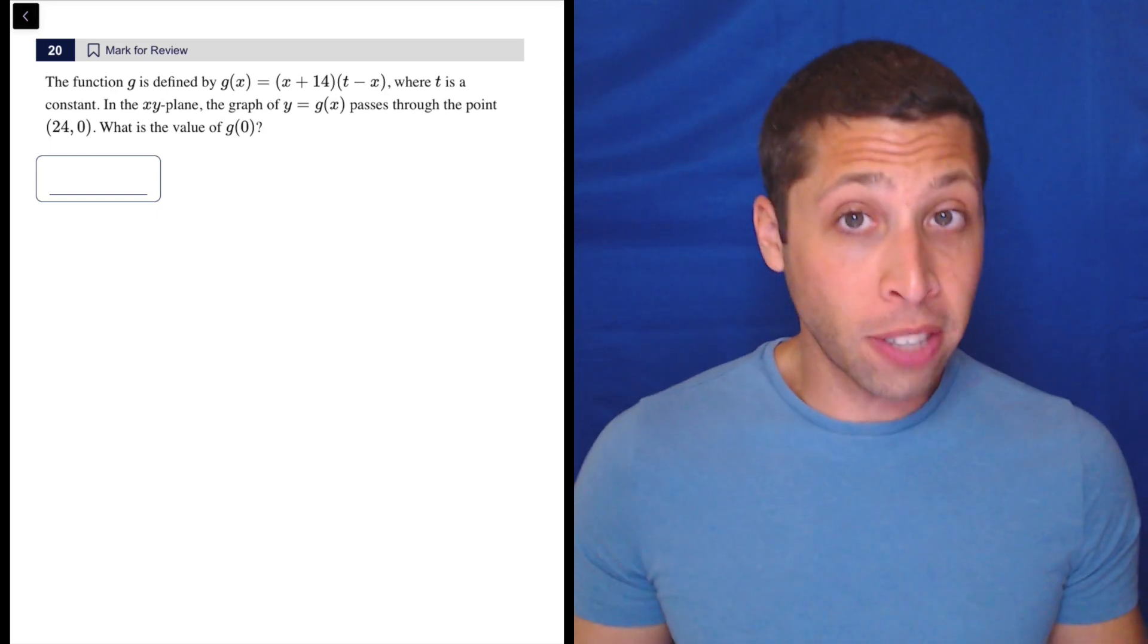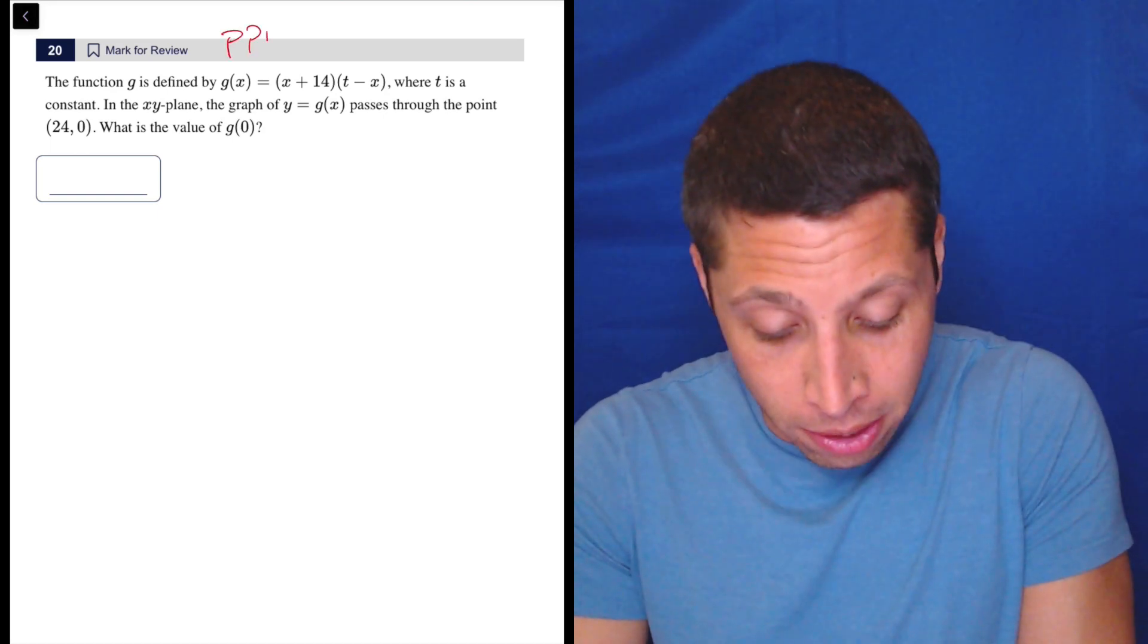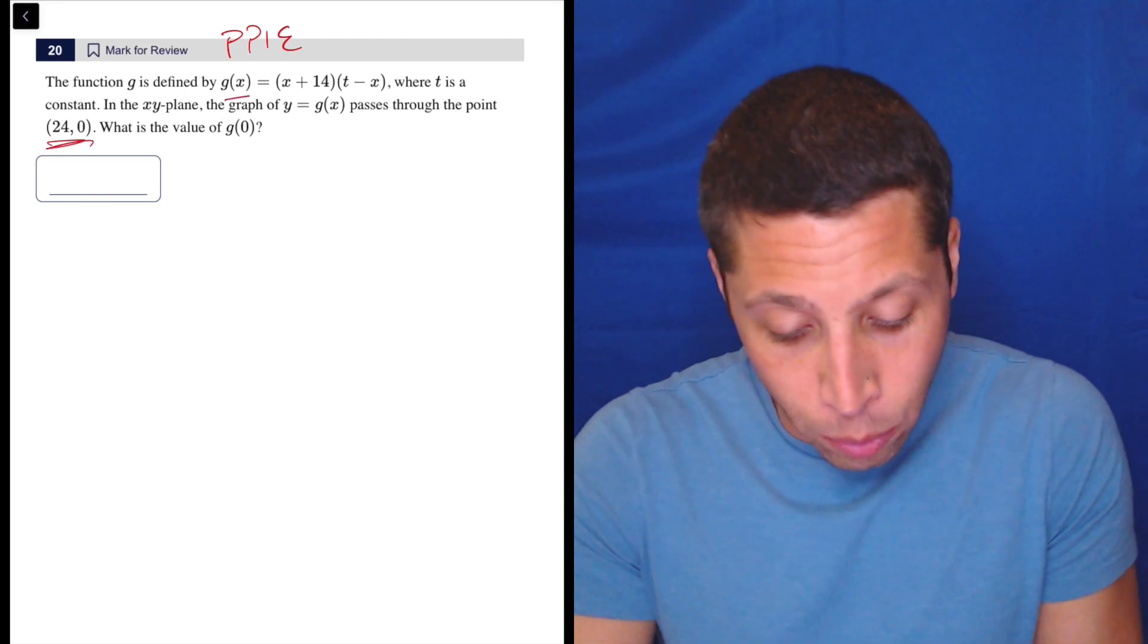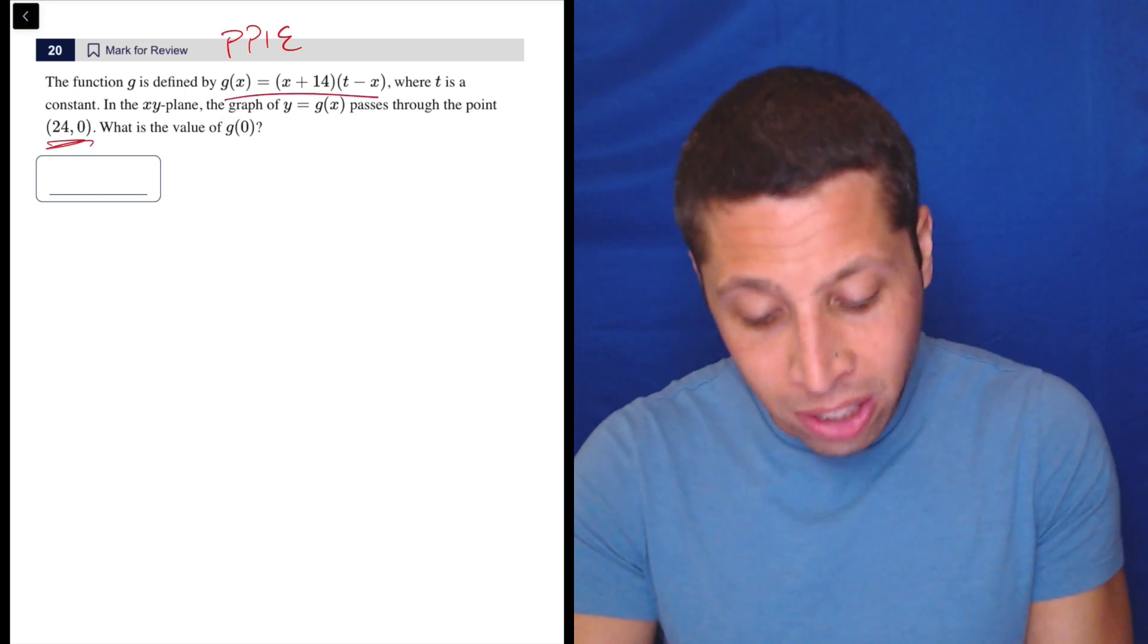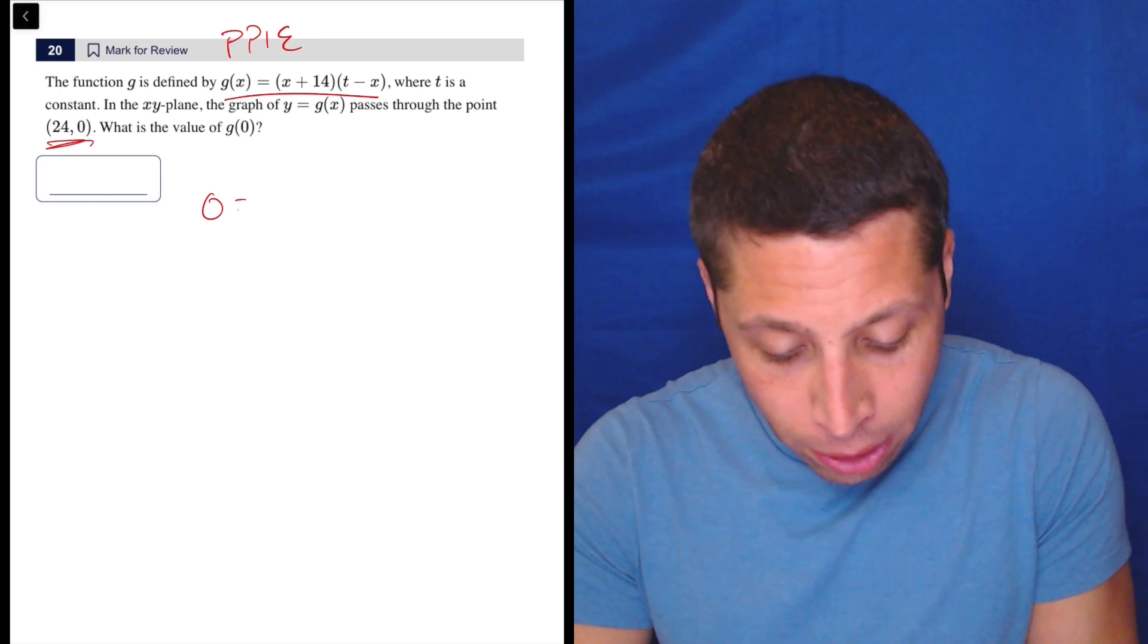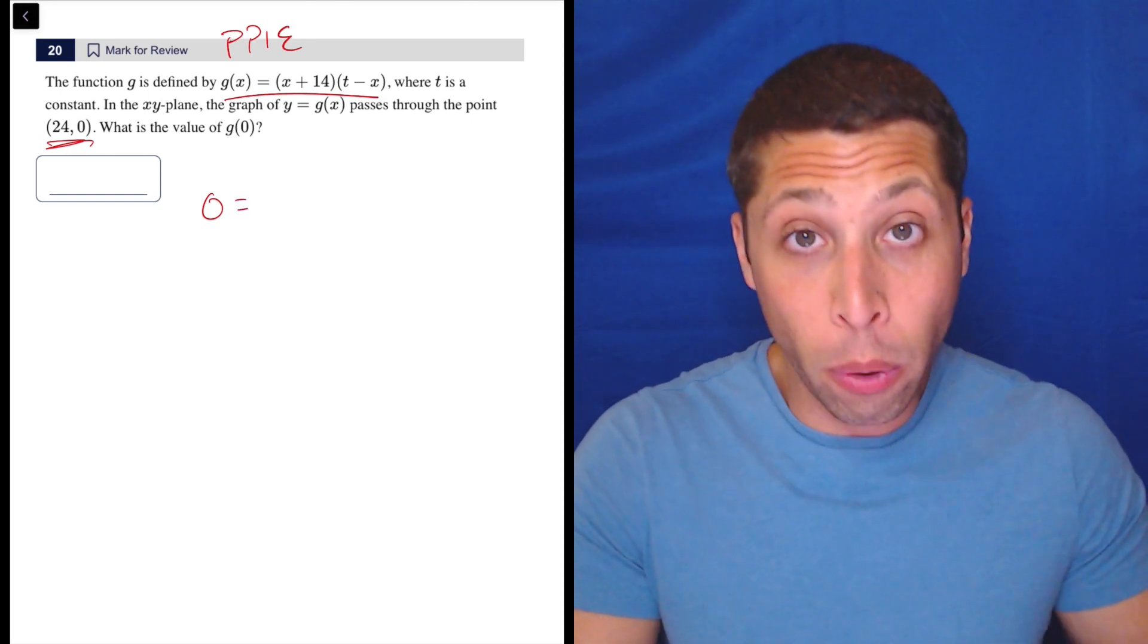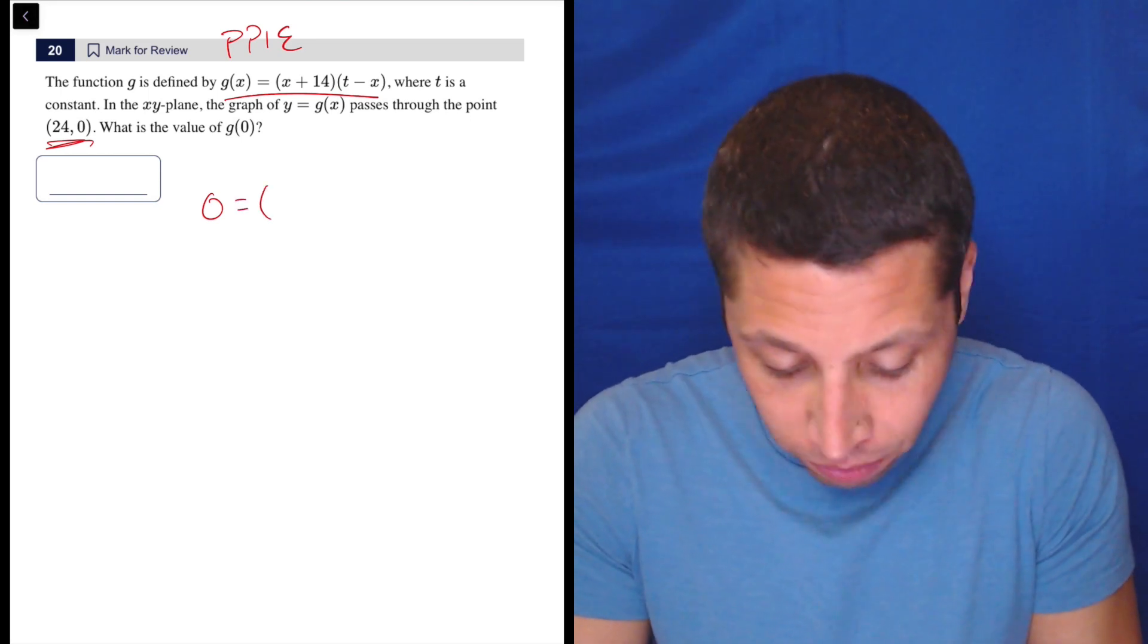So it starts out normally. Plug points into equations - our main math strategy. What do we have? We have a point. We have an equation. Plug it in. So zero is kind of like our Y. That goes in for the g(x). And then 24 is the X. So let's just follow instructions here.